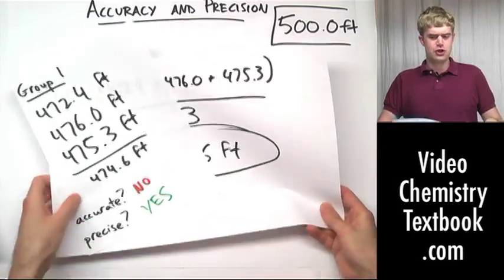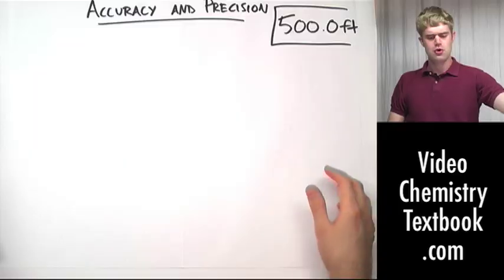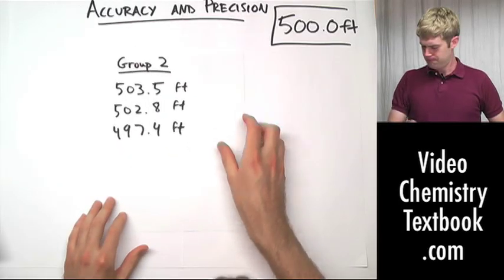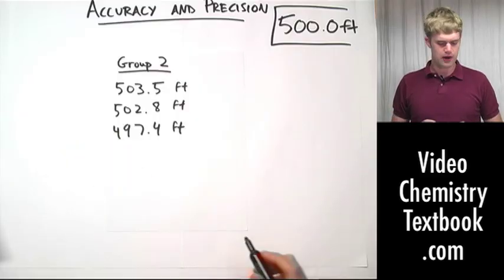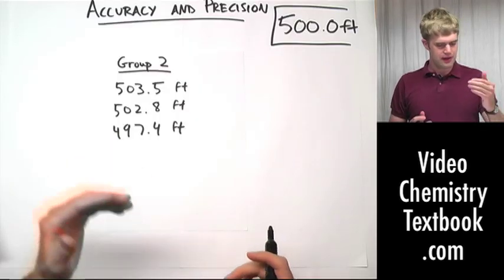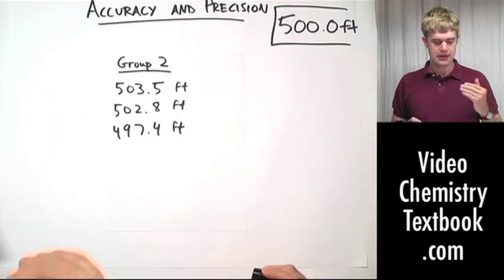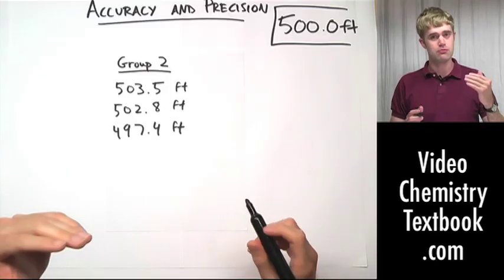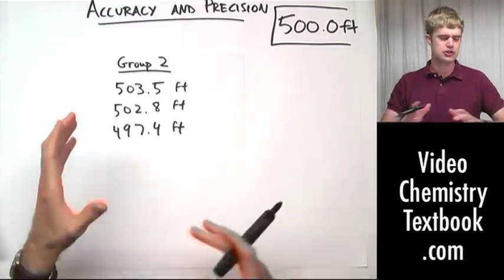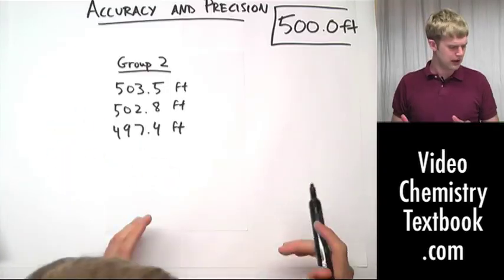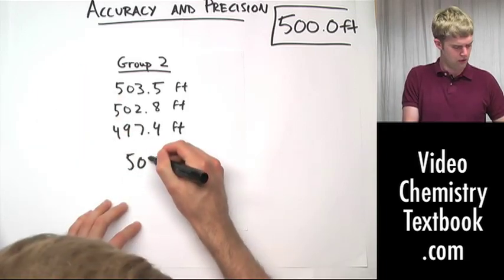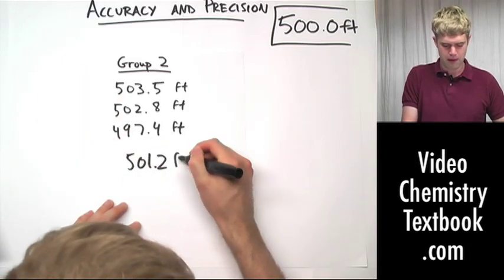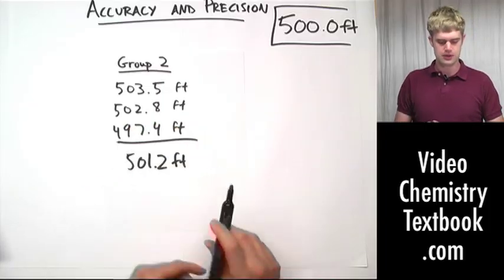Let's take a look at group two. Group two's data is here: 503.5, 502.8, and 497.4 feet. They add these three up and divide by three, again, because when we do multiple measurements, we take the average to help smooth out any kind of errors. You take these, and you get 501.2 feet as the average.